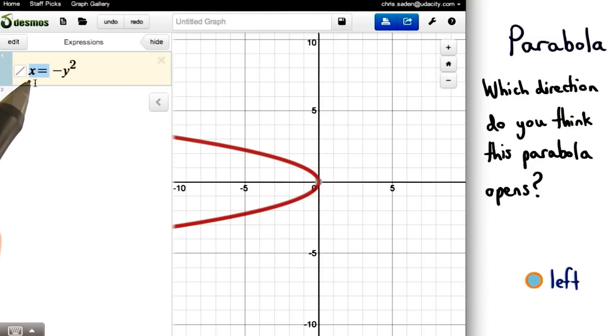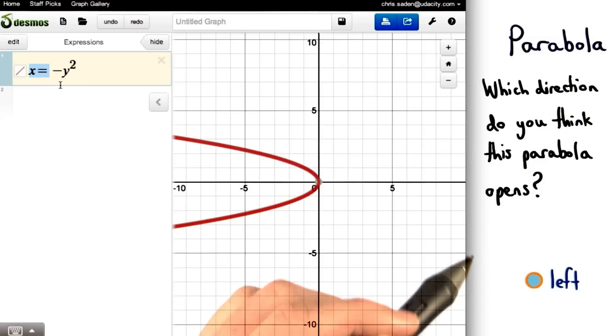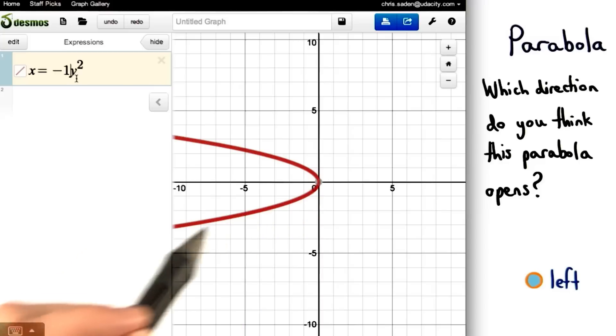One of the key things to recognize is that this equation is in the form x equals. Parabolas that are in this form either open to the left or to the right. Since the a value is negative 1, we know the parabola will open to the left.